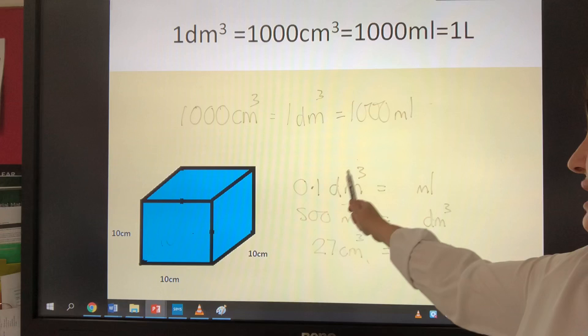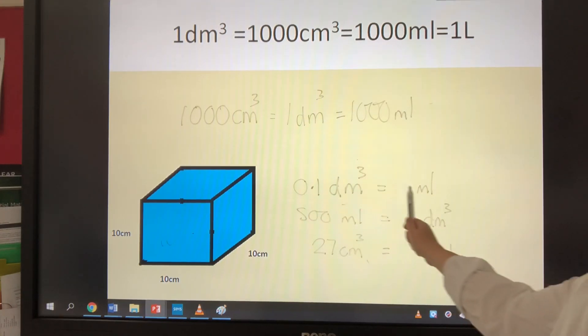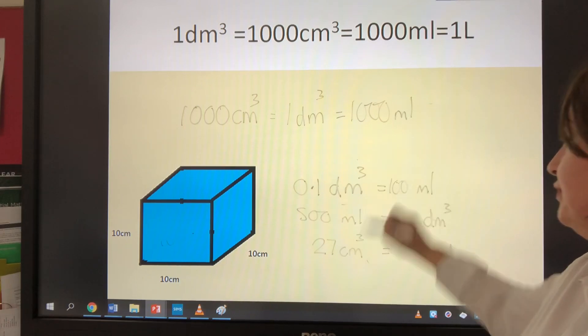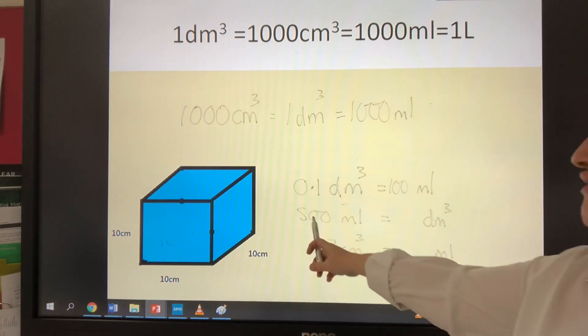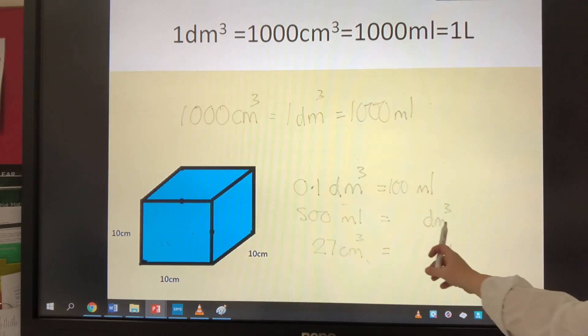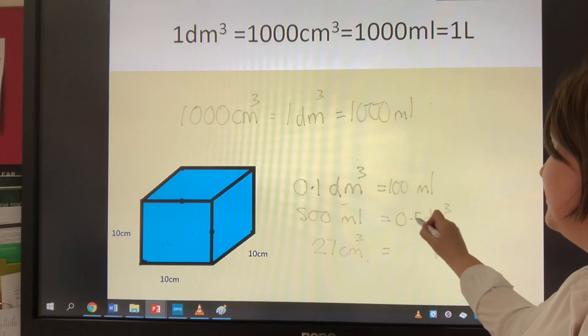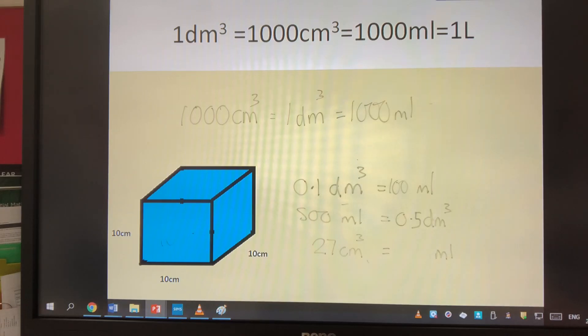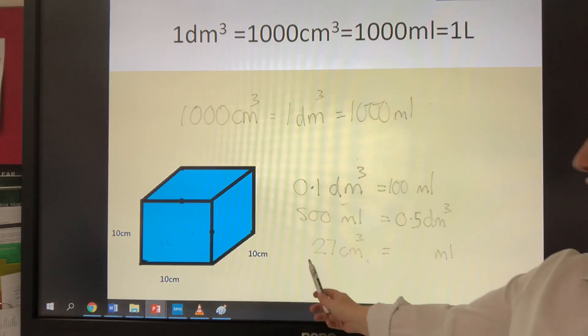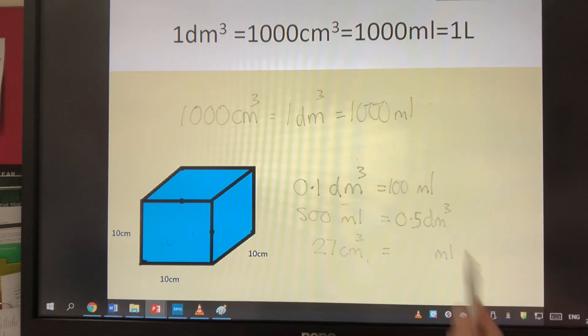We've got 0.1 decimetre cubed as millilitres. That would be 100. We've got 500 millilitres as a decimetre. That would be 0.5 decimetre cubed.